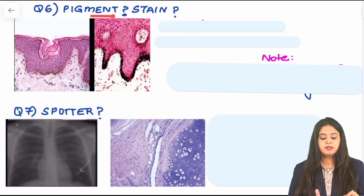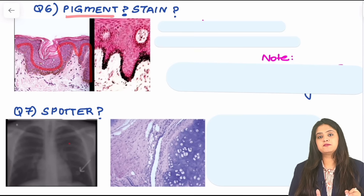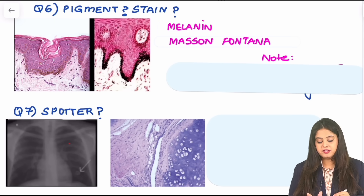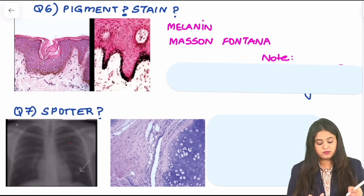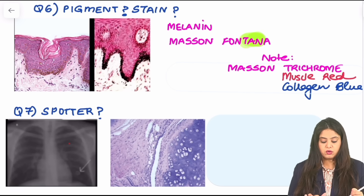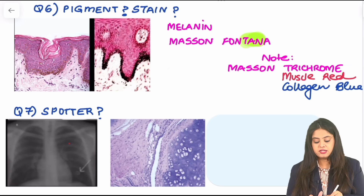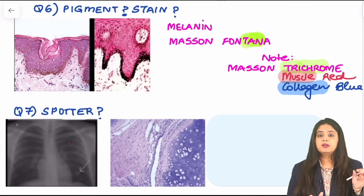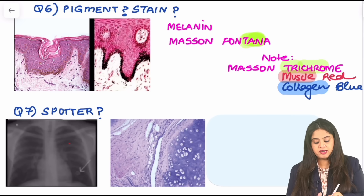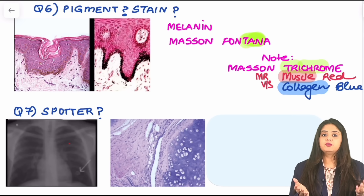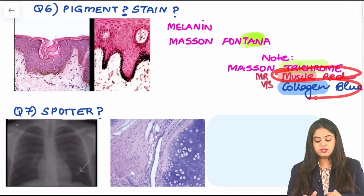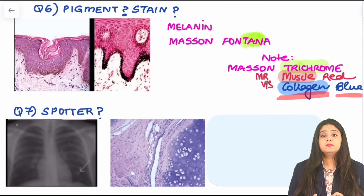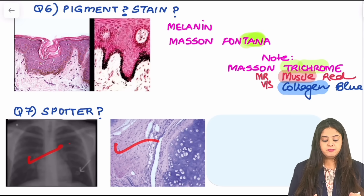Question 6 is a spotter question. The image shows skin with a pigment — this is melanin. The special stain for melanin is Masson Fontana — never call it Masson Trichrome. Masson Trichrome is a different stain that uses three colors to differentiate muscle (red) from collagen (blue). For example, in a keloid or any scar with a lot of collagen, Masson Trichrome will show very blue coloring.